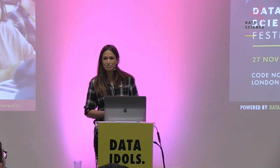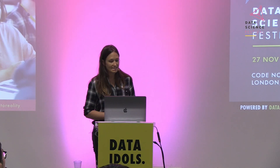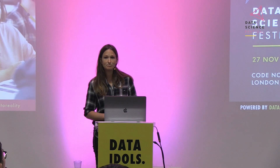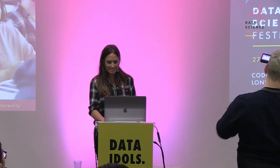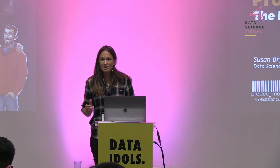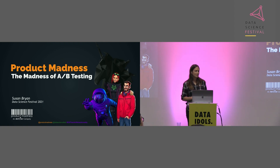I then moved into the charity sector where I worked as a data scientist for a cancer charity, and now I'm working as a data scientist at Product Madness. One of the great things about being a data scientist is that you can work in so many different areas and use very similar modeling techniques to answer very different problems.